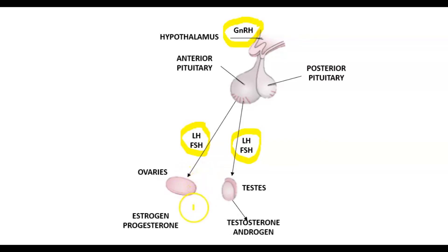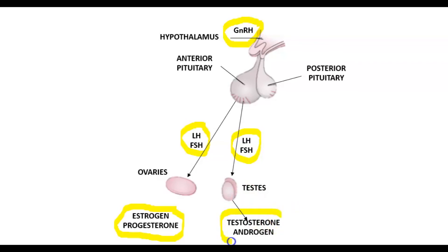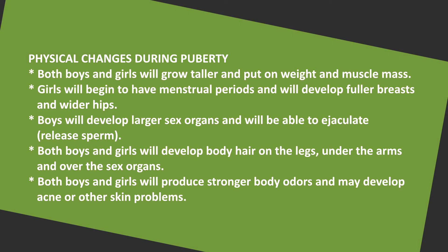In girls, FSH and LH instruct the ovaries to begin producing estrogen — one of the primary female sex hormones — and to stimulate the maturation of eggs. For boys, the same hormones tell the testes to begin producing testosterone and sperm cells. You will also notice significant changes in your body: you will grow taller and put on weight and muscle mass. For girls, you will begin to have menstrual periods and develop fuller breasts and wider hips. For boys, larger sex organs will develop and ejaculation becomes possible. For both girls and boys, you will develop body hair on the legs, under the arms, and over the sex organs, and may produce stronger body odors or develop acne.